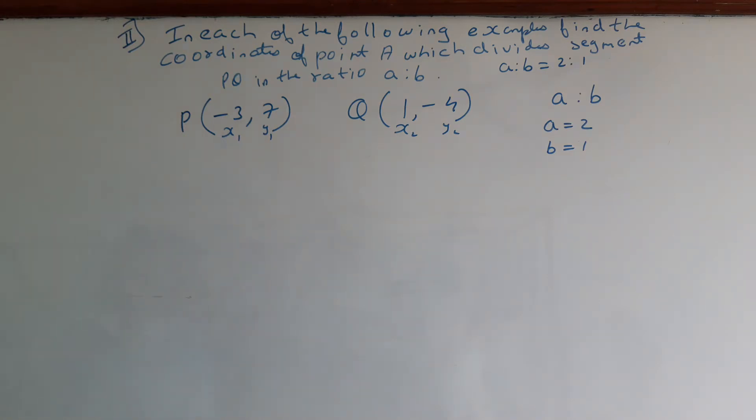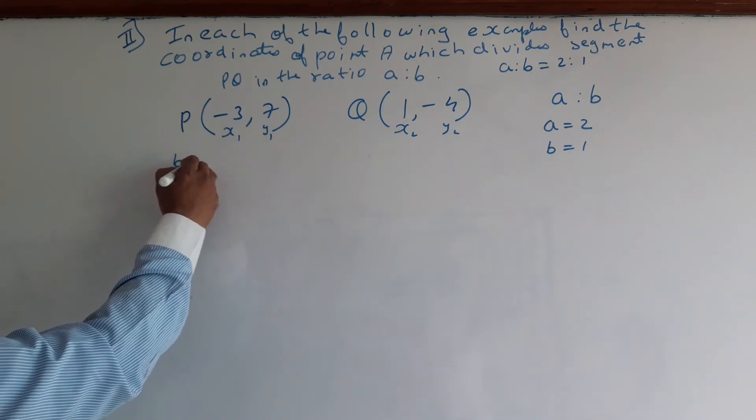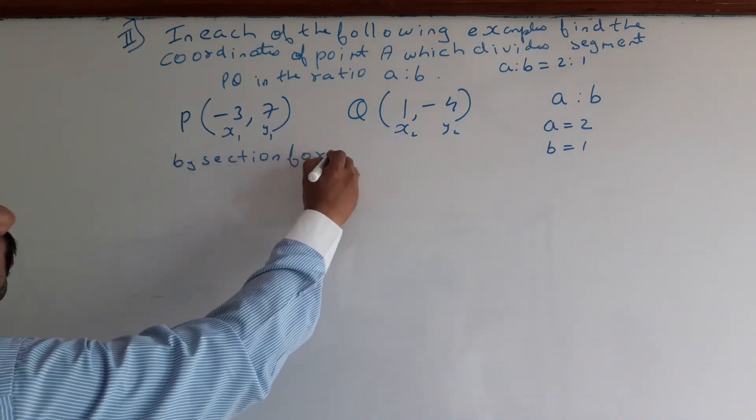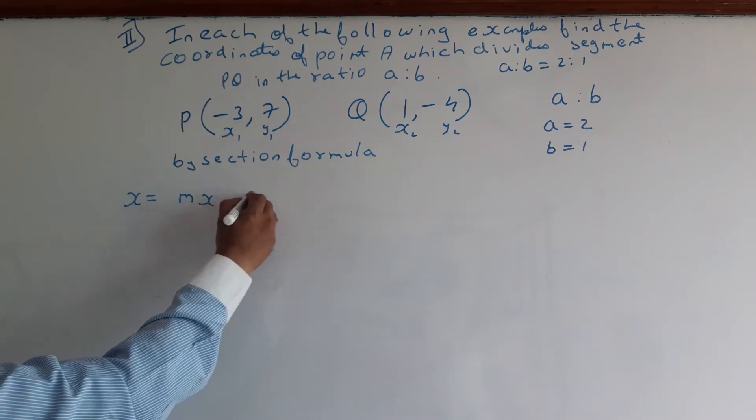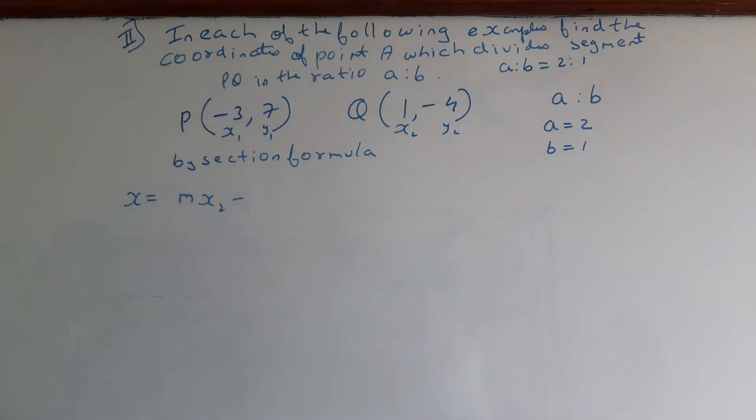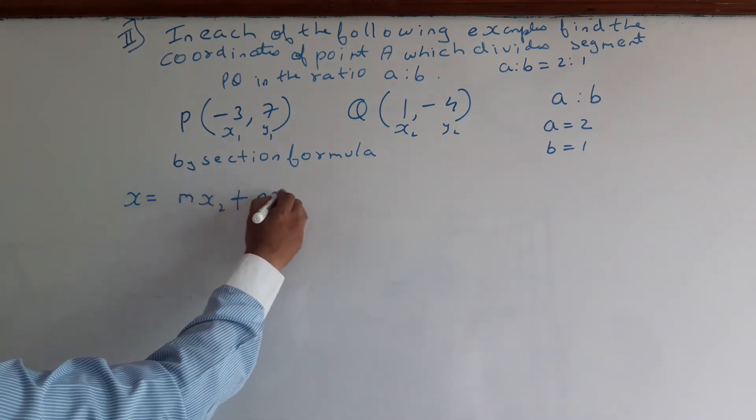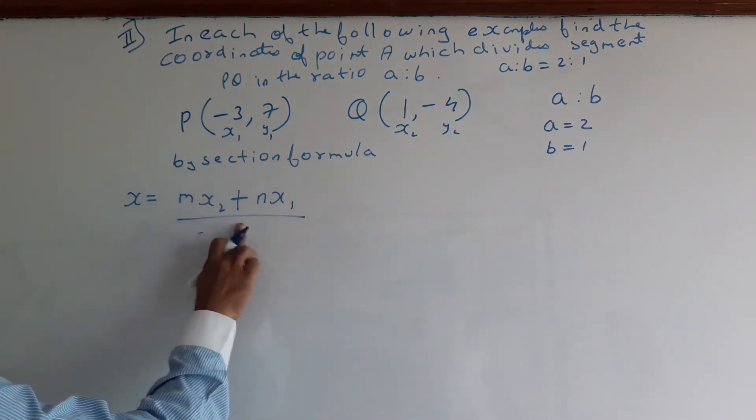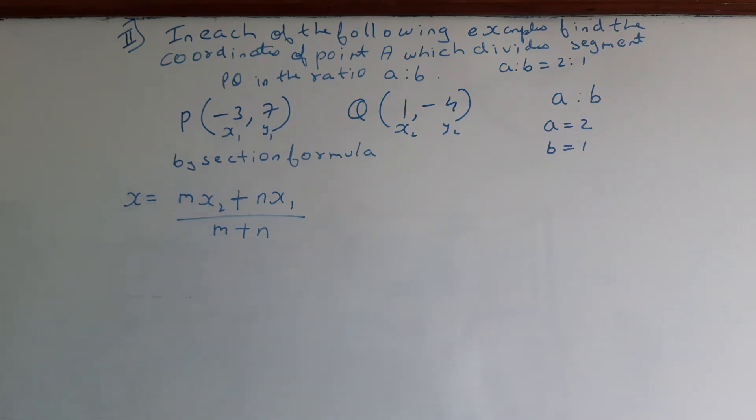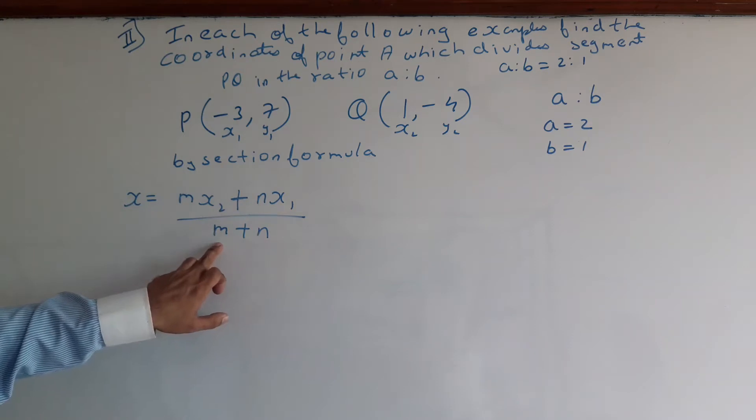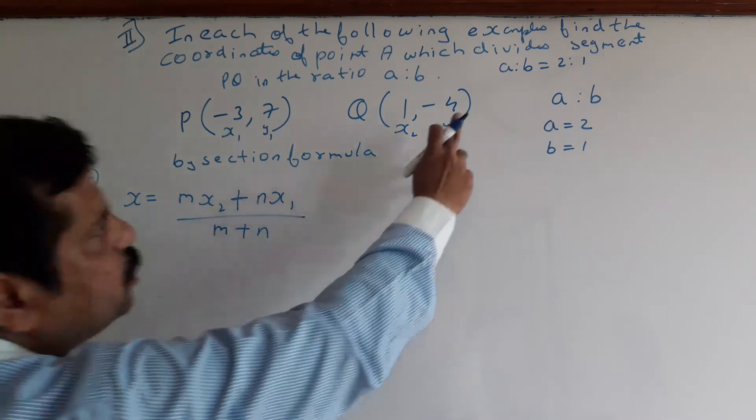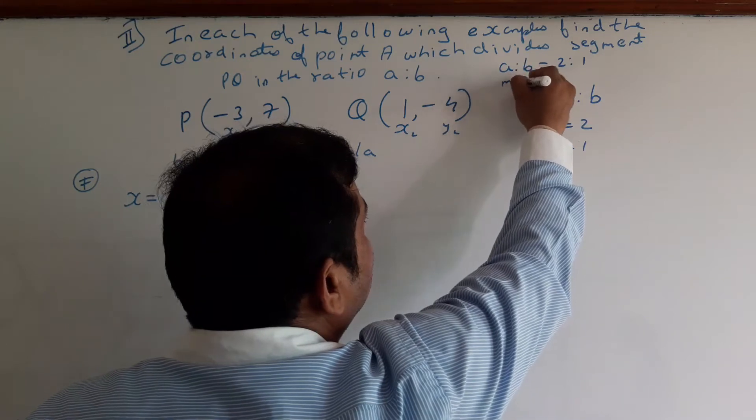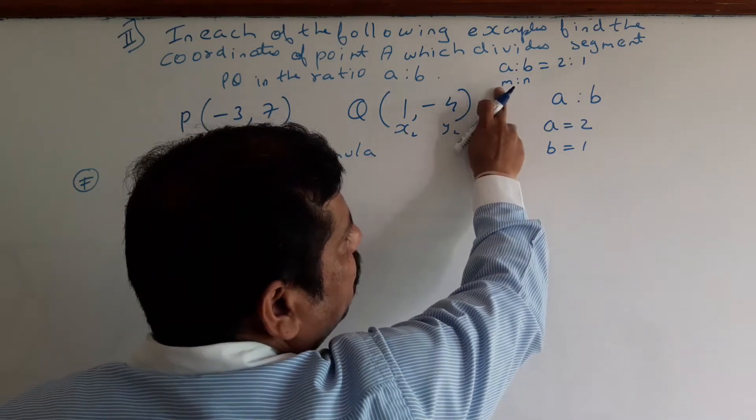Now we will use the section formula. By section formula, X equals (MX2 plus NX1) upon (M plus N). This formula can also be written as X equals (AX2 plus BX1) upon (A plus B), where we change from M:N notation to A:B notation.